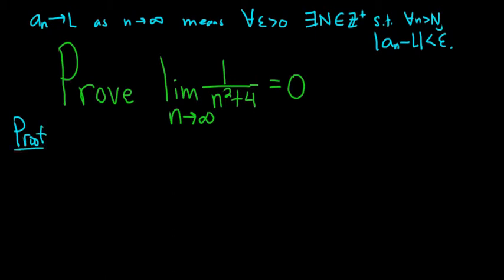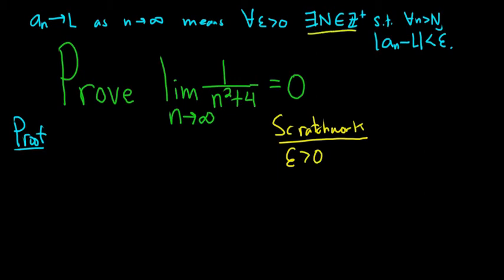There are usually two parts to working a problem like this out: there's the proof and there's the scratch work. I'll do the scratch work over here on the right-hand side. So we'll have an epsilon greater than 0 and we'll have to find our capital N such that this is true. The natural thing to do is write down our a sub n, which is this here.